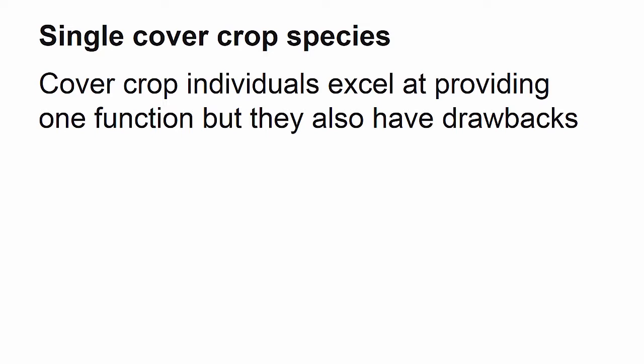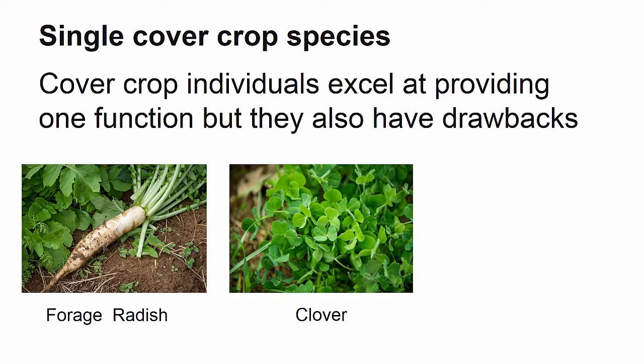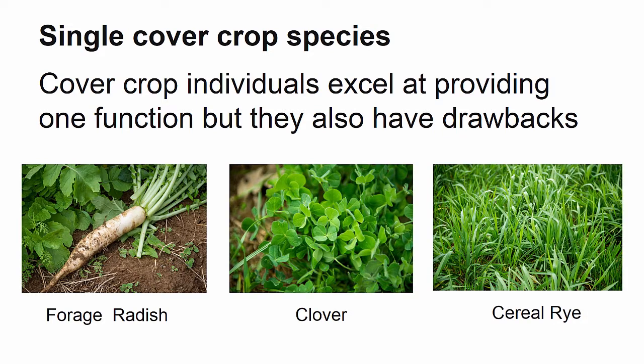Individually, cover crop species can excel at providing separate functions; however, they also have their own drawbacks when it comes to providing multiple functions. For example, forage radish suppresses weeds in the fall and breaks up soil compaction, but because it is a winter-killed species, it can contribute to nitrogen leaching in the spring. Clover fixes nitrogen, but the minimal amount of biomass it produces is not very effective in suppressing weeds. Cereal rye prevents nitrogen leaching from the soil, but immobilizes nitrogen for the following cash crop.